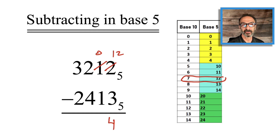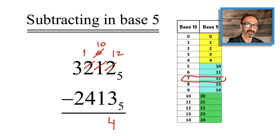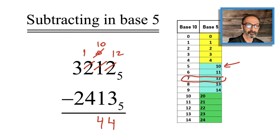Now the second digit to my left is 0 minus 1, which I cannot do. So I borrow from the 2 to my left — I make it 1 and make the 0 become 1 0. What's 1 0? It's 1 five and 0 units, which is like 5. So 1 0 minus 1 would be 4.